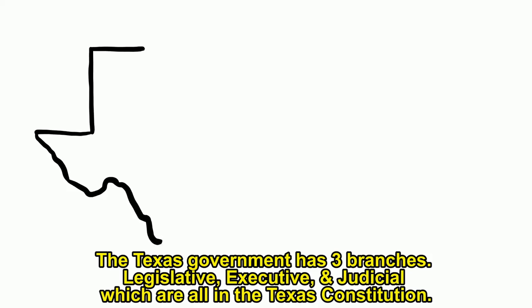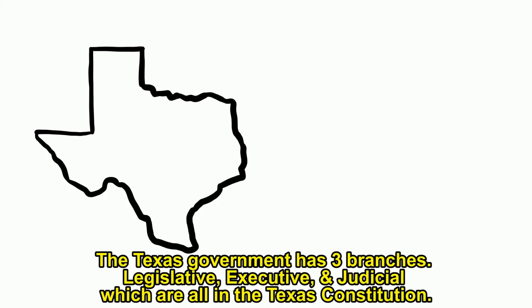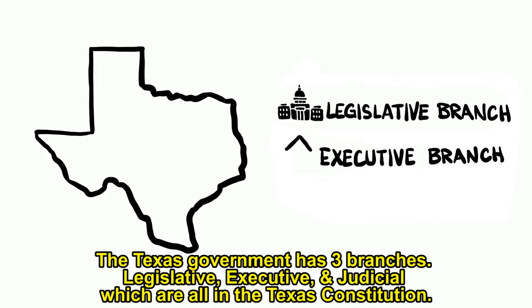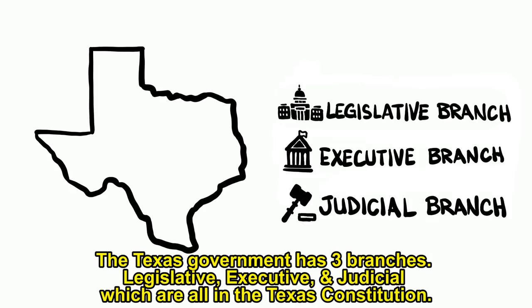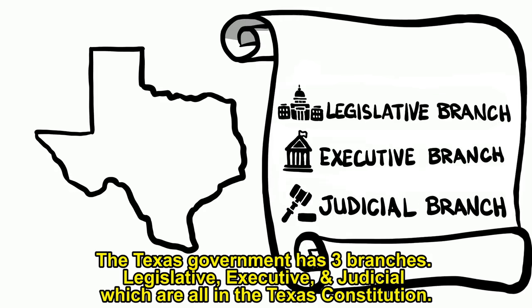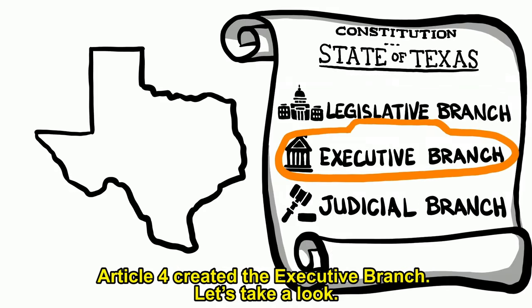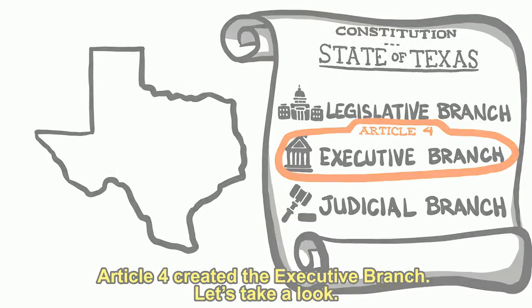The Texas government has three branches — legislative, executive, and judicial — which are all in the Texas Constitution. Article 4 created the executive branch. Let's take a look.